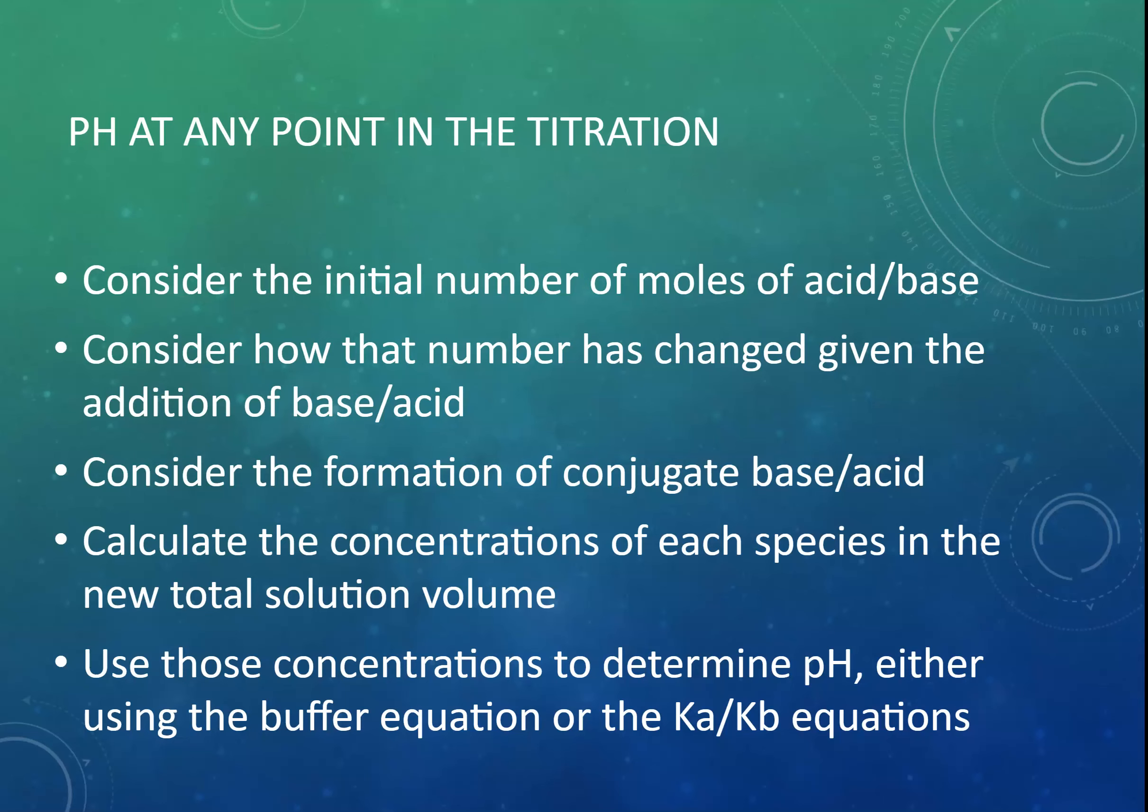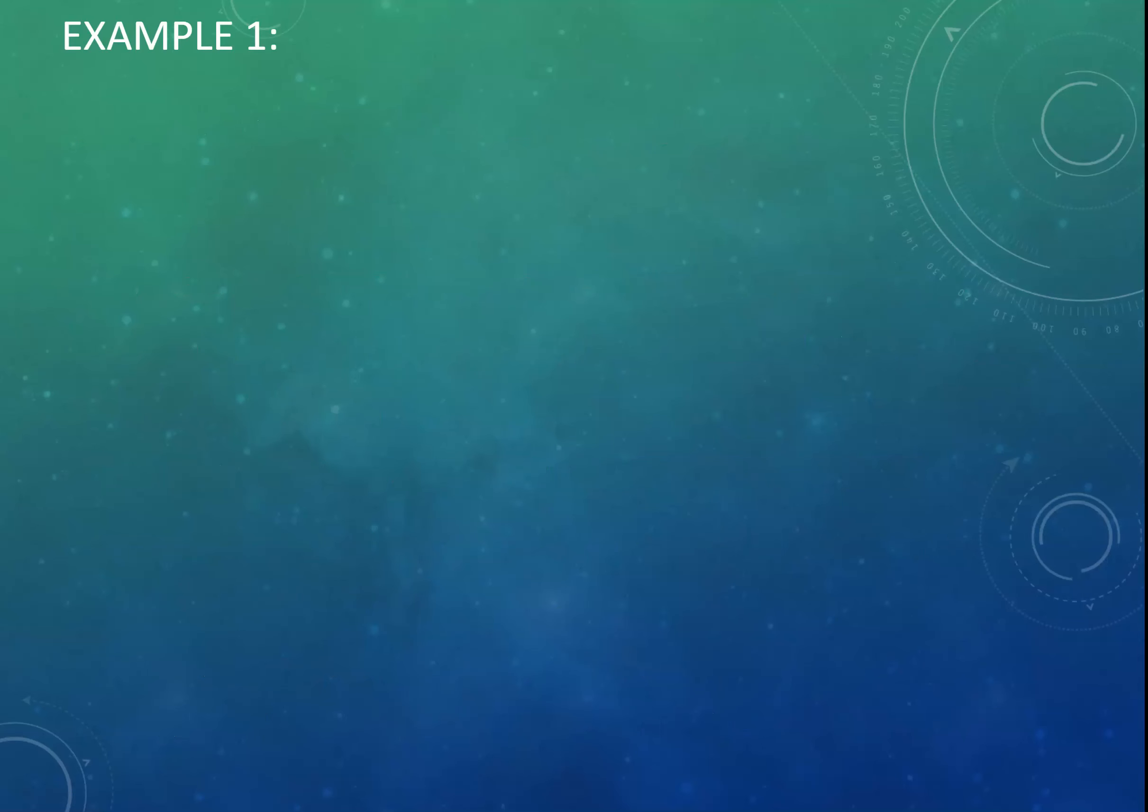Once you know what's going on, you can use your Ka or Kb expression to work out the pH. Just by putting that in. And you can treat it, if it's in that buffer region particular, you can treat it like a buffer calculation, because that's effectively what it is. You've got a mixture of an acid and its conjugate base at some concentrations, so you can treat that in that way.